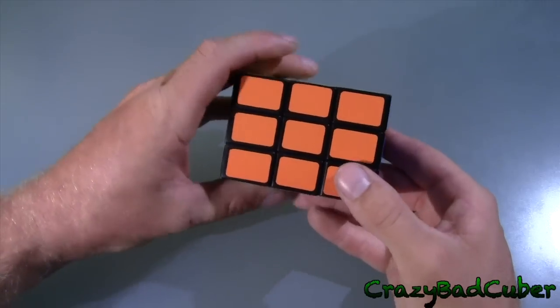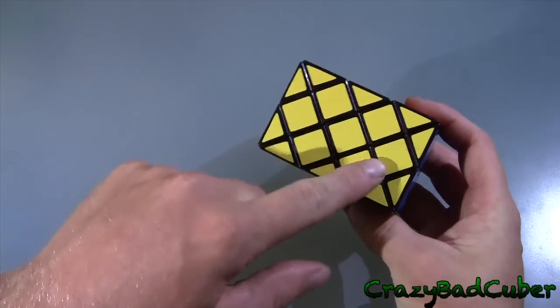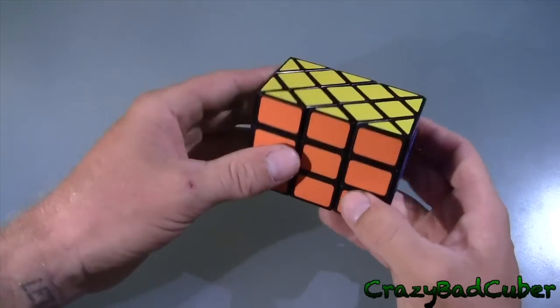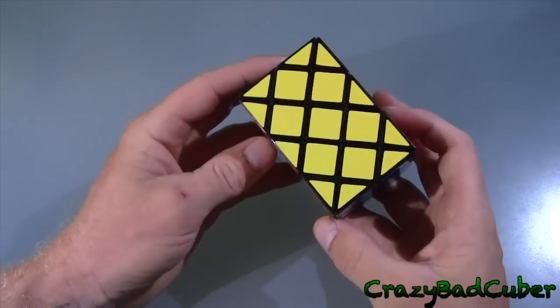One is an edge orientation parity where you'll have three of them oriented properly and one not. That's having this edge piece here flipped upside down which will create that parity. I've seen that in many other ones too.